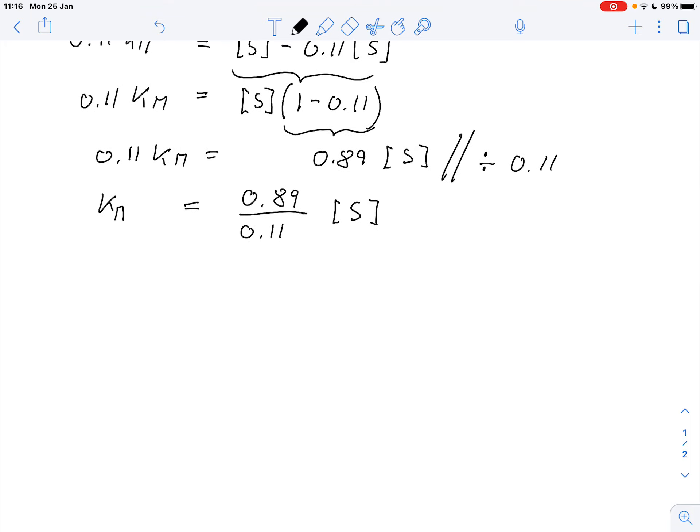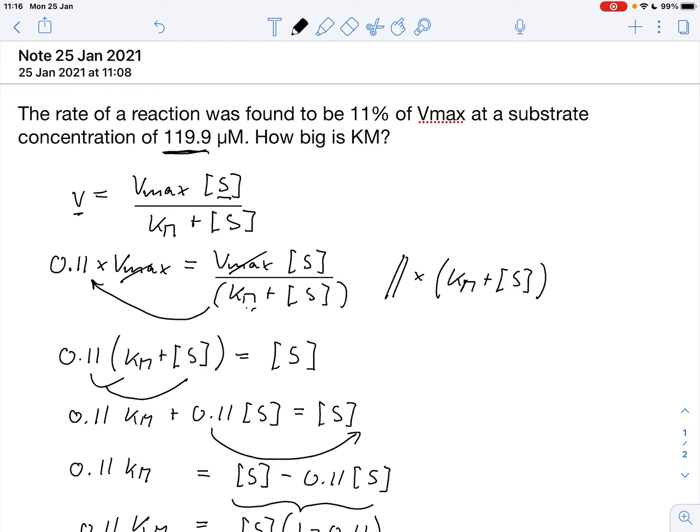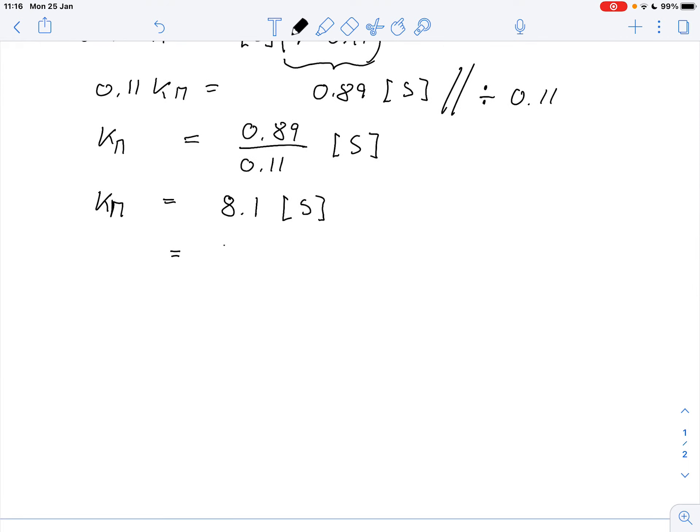And I can put that in the calculator. I can say Km equals 0.89 divided by 0.11. That gives me roughly 8.1 times the substrate concentration that we have. And we had a substrate concentration of, what was it? 119.9 micromolar. So we have 8.1 times 119.9 micromolar. And we can calculate that.